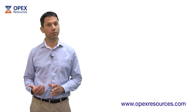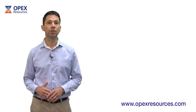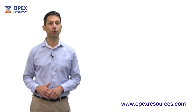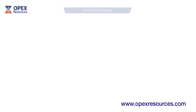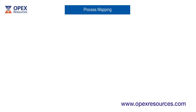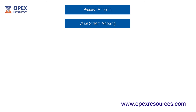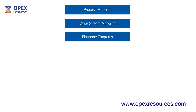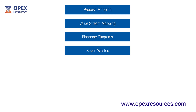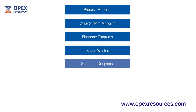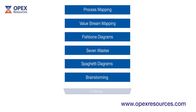For analyzing processes, useful tools include process mapping, value stream mapping, fishbone diagrams, seven wastes, spaghetti diagrams, brainstorming, and five whys.